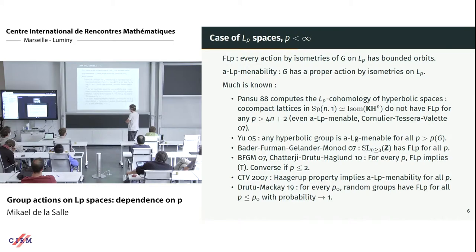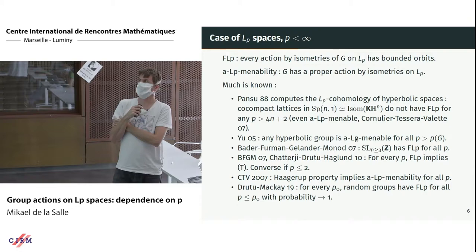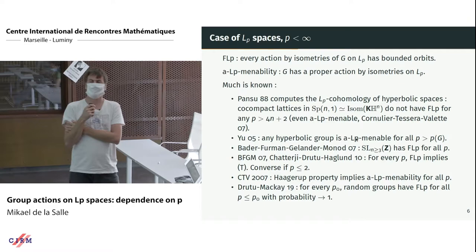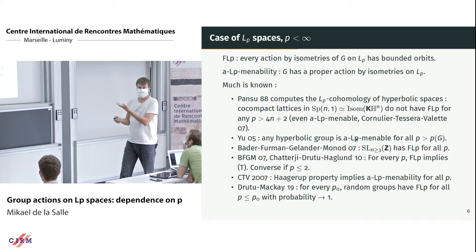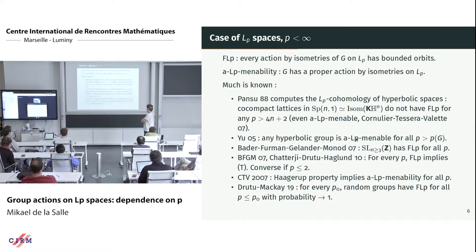One important example is Pansu's computation in the late 1980s of the LP cohomology of hyperbolic spaces. Restricting to quaternionic hyperbolic spaces: for Sp(n,1), the isometric group of the quaternionic hyperbolic space of dimension n, it does not have FLp for p > 4n+2. Pansu computes that the cohomology with values in the left regular representation vanishes if and only if p ≤ 4n+2, giving unbounded actions on LP spaces for those p values. In 2007, Cornulier, Tessera, and Valette observed that the actions Pansu constructs are actually proper.